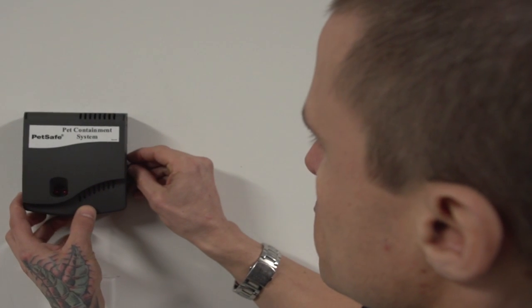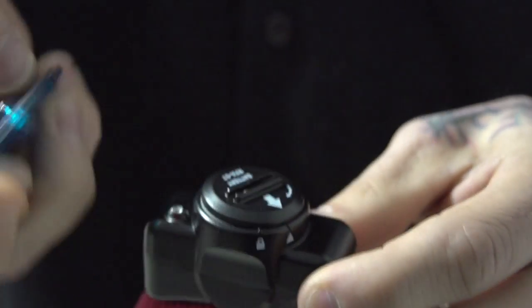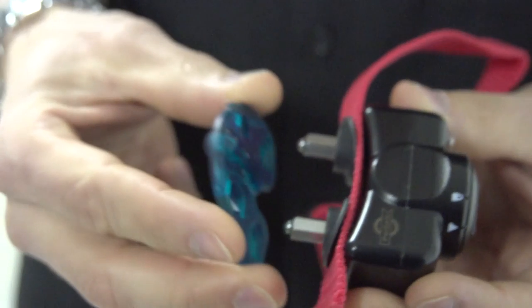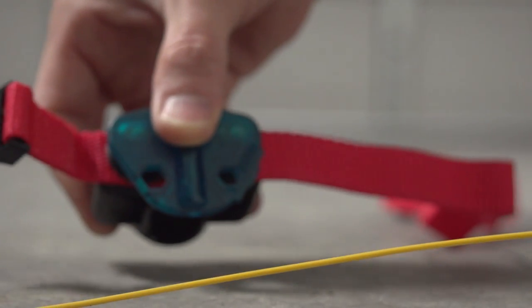We're sorry you're experiencing trouble with your in-ground containment system. This system test will allow you to figure out if your issue lies with the system's transmitter, receiver collar, or boundary wire.